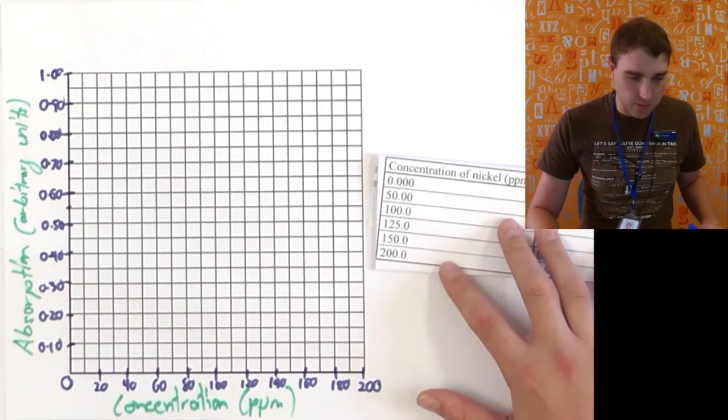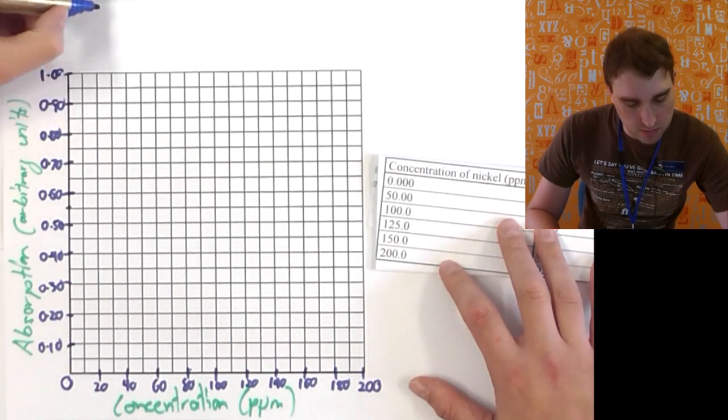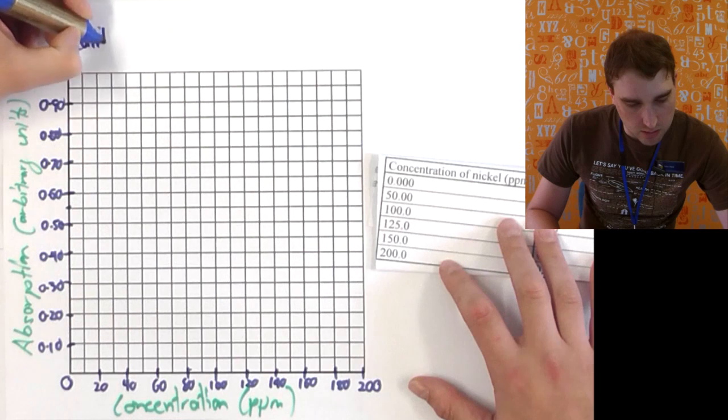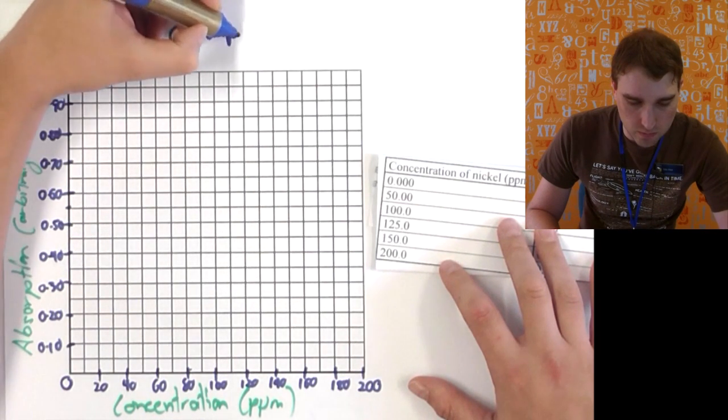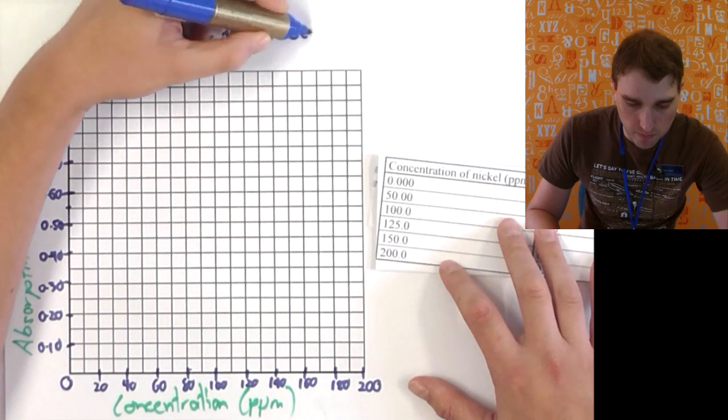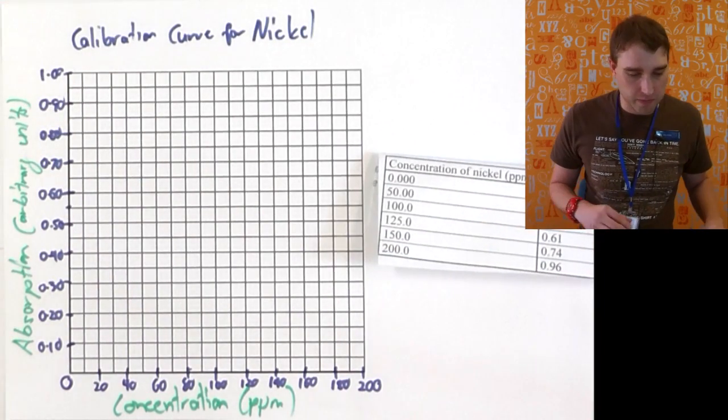Another thing I'll do, just for fun, I'll put a bit of a title in. So calibration curve for nickel. So I have a bit of an idea about what I'm looking at.